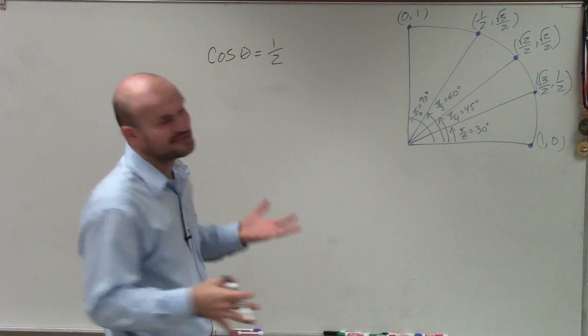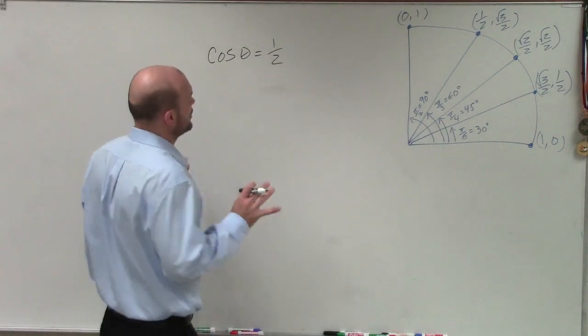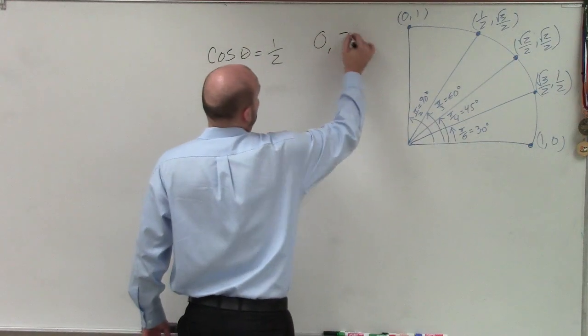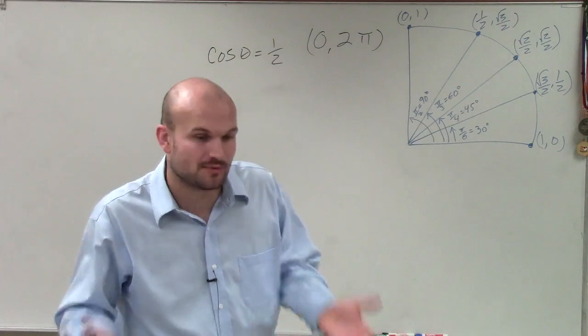Welcome. All right. So in this example, this one's not so bad. You can see I have the unit circle, and what we're trying to do is evaluate for our two points between 0 and 2π that are going to correspond when cosine of theta equals 1/2.